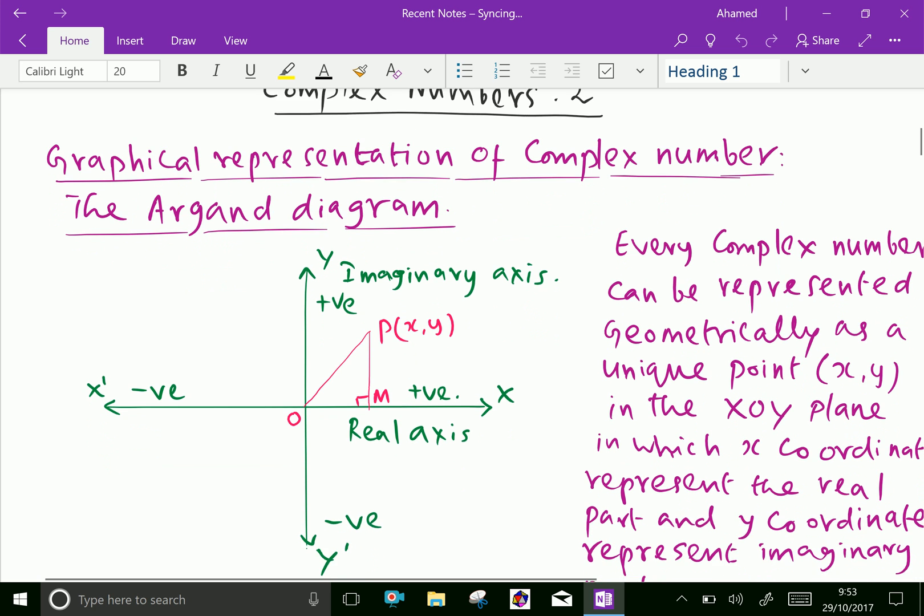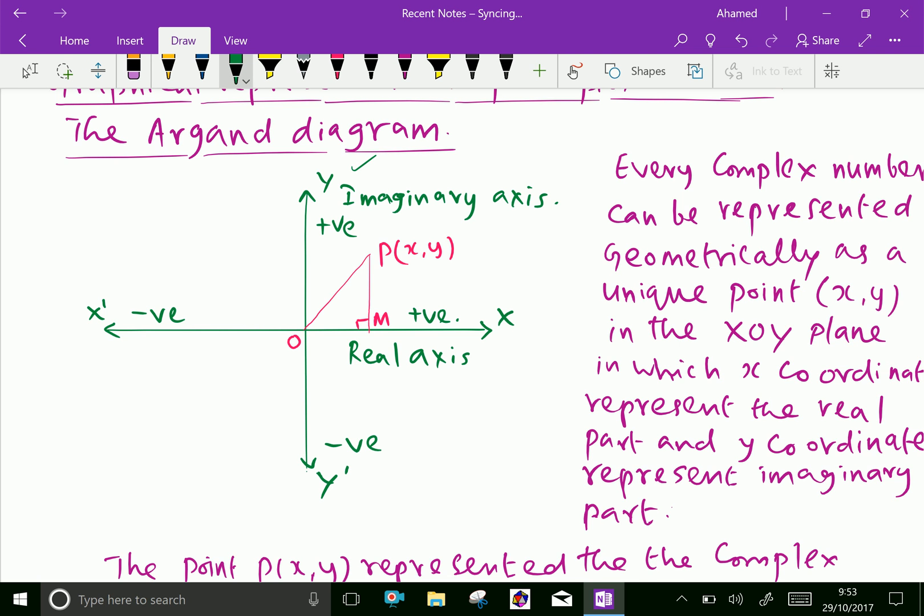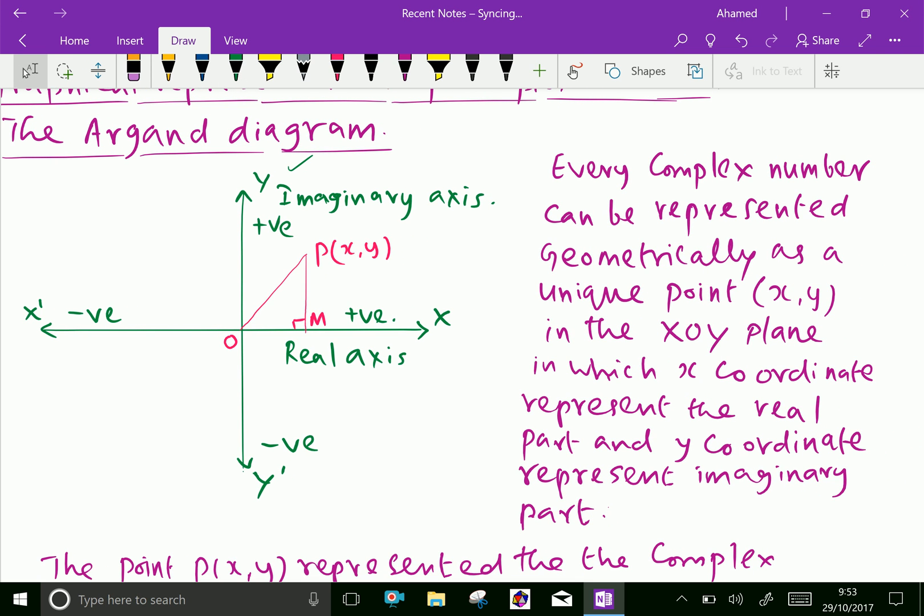Look at this figure. In the xy-plane, the x-axis is the real axis and the y-axis is the imaginary axis. Now, every complex number can be represented geometrically as a unique point (x, y) in the xy-plane.